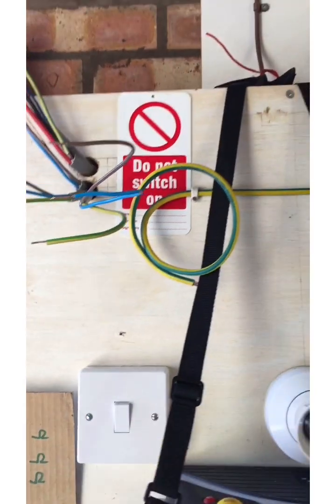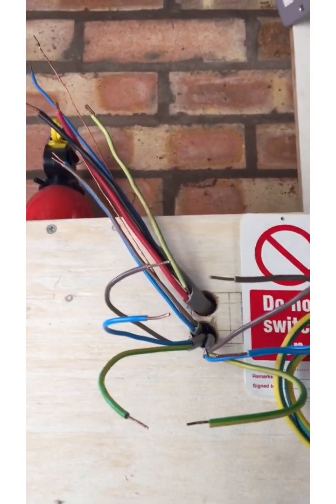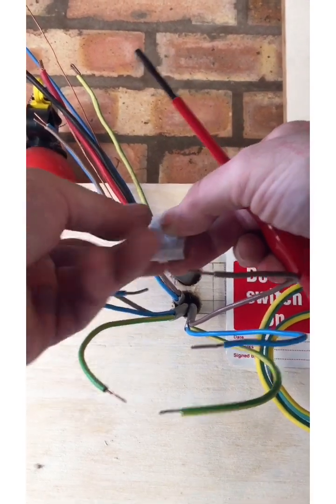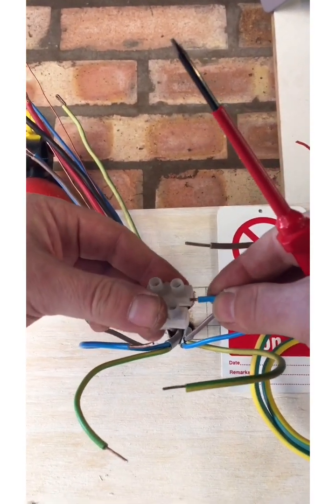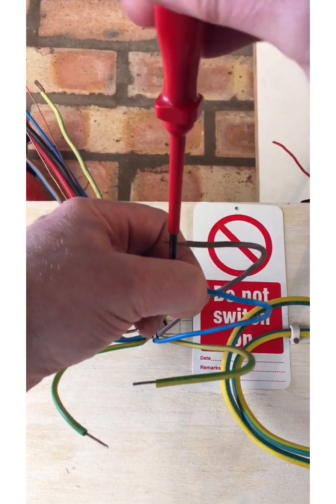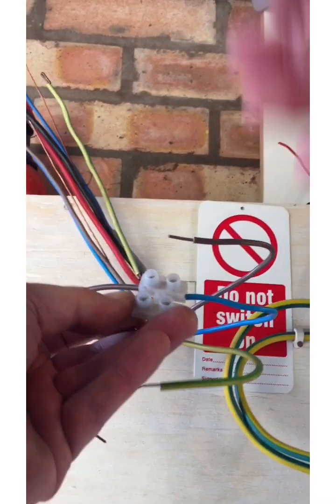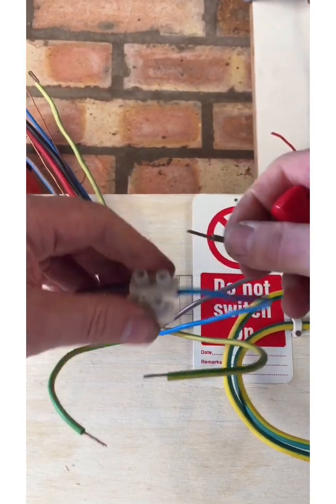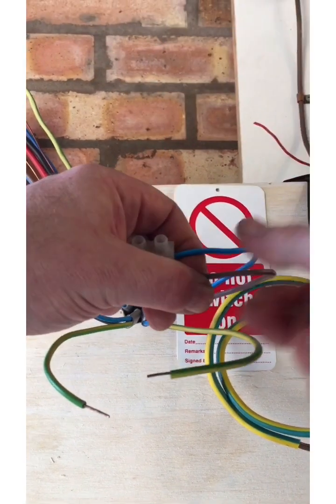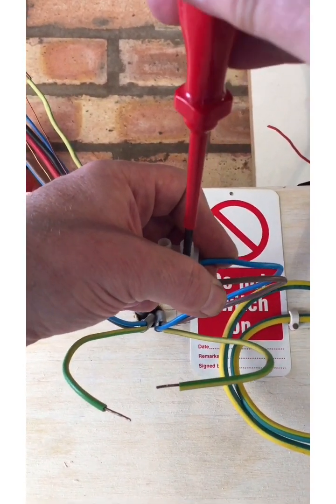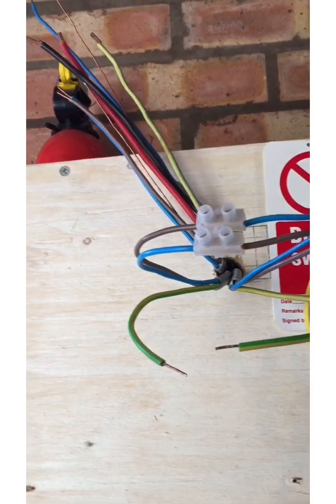If we go to step two, now step two involves reconfiguring the way that these are set up here. And this is called the figure of eight connection between the line and the neutral. Now what we're doing here is we're taking the incoming line, so you can see that, and connecting it with the outgoing neutral. And here we've got the incoming neutral, and we're connecting that with the outgoing line. So there we go. That's our figure of eight connection.